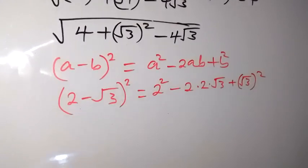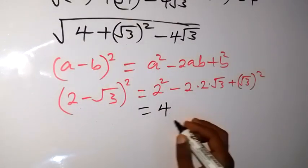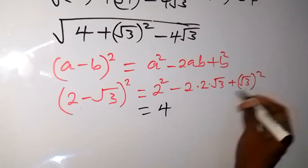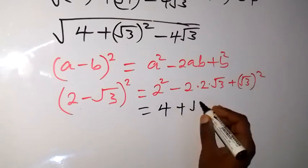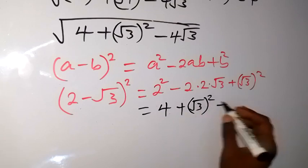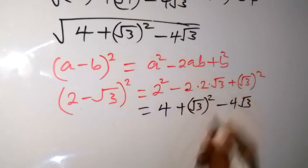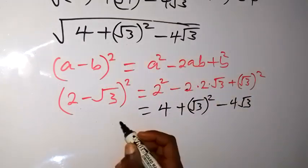Because if I write this again, this will be 4, then bringing this one here we have root 3 squared, then I have minus 2 times 2, that's 4, then root 3. When you compare this with what is inside the root, you discover they are the same.